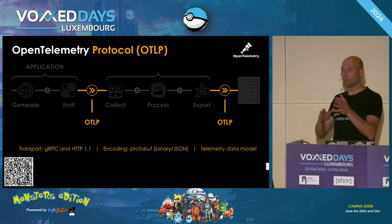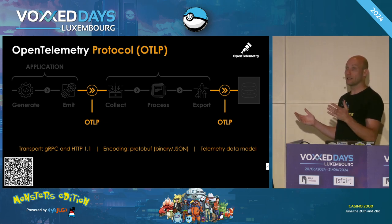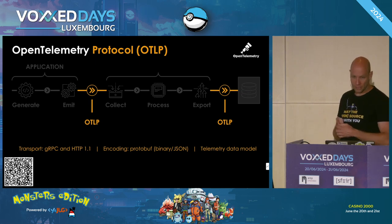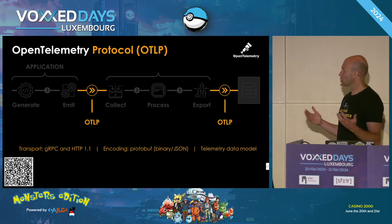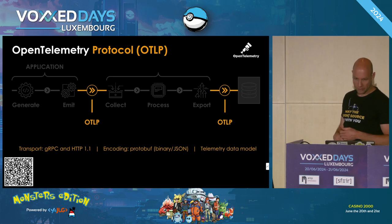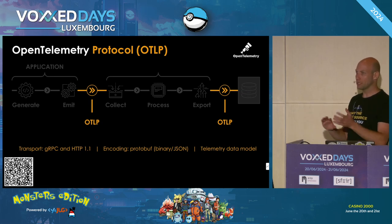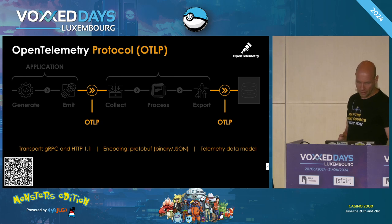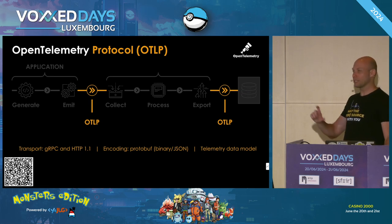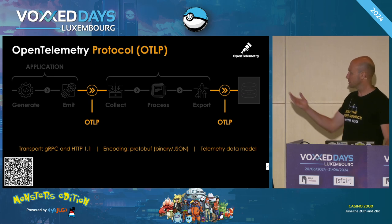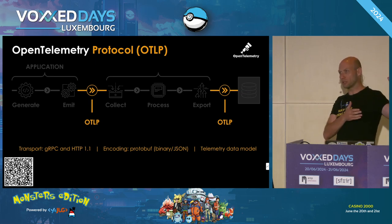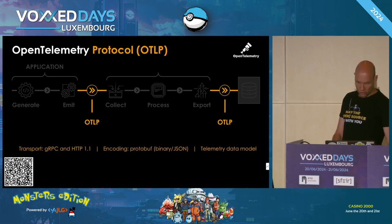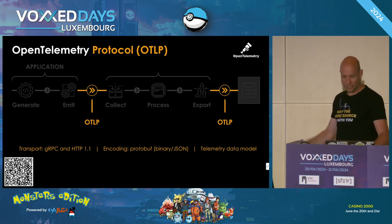The last piece is OTLP — the OpenTelemetry Protocol — a general-purpose telemetry data delivery protocol, implemented over gRPC and HTTP 1.1 transports. So you have OTLP over HTTP and OTLP over gRPC. The encoding is protobuf — you can have binary or JSON. The data model is based on the specification. These are the main components of OpenTelemetry.